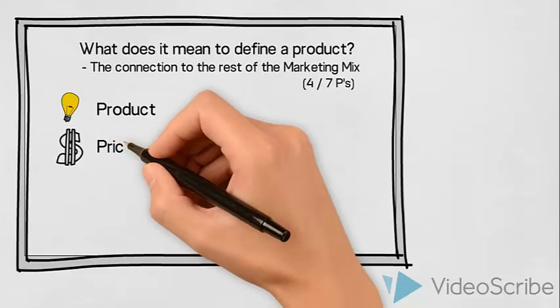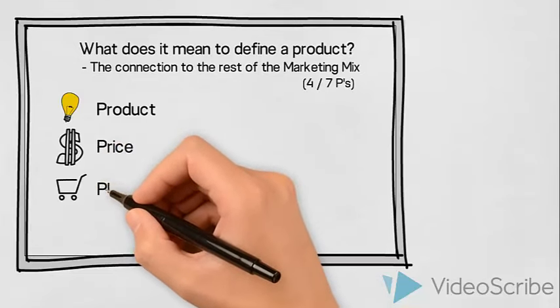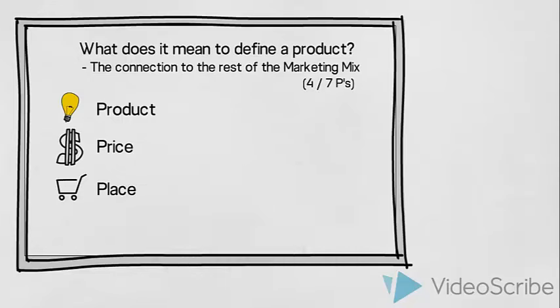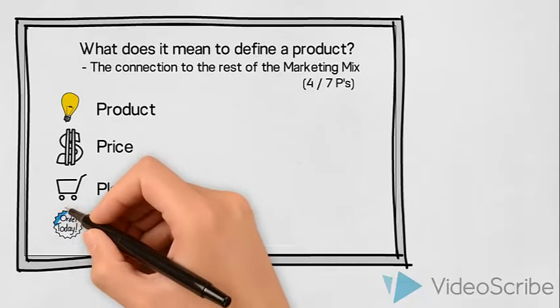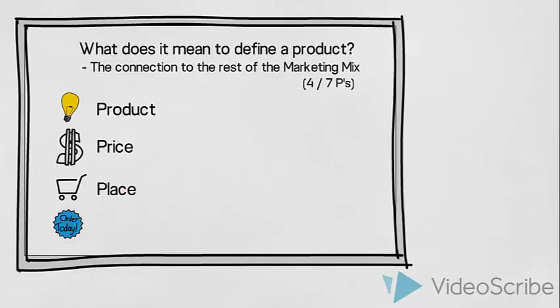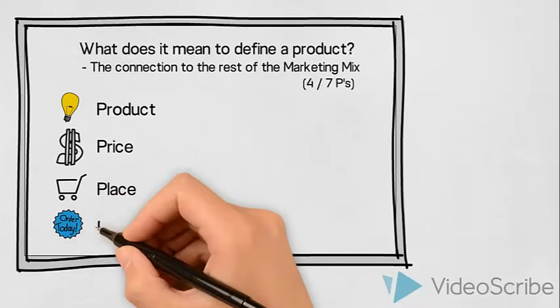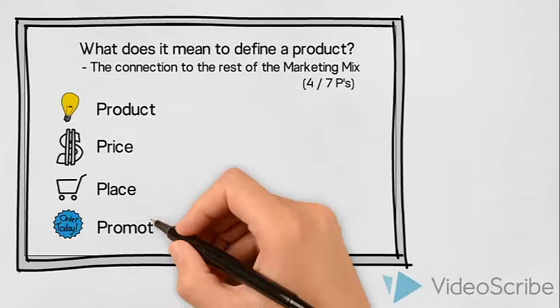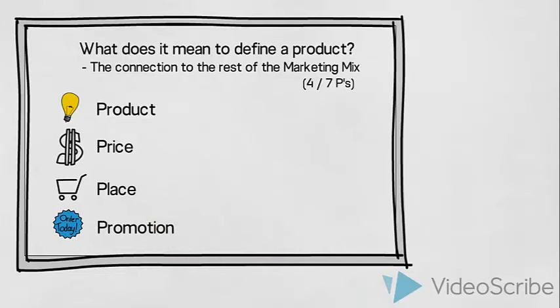Secondly, a decision on price. Thirdly, you will need to decide on the place, through which channels will you distribute the product or service. We also need to make a plan on which promotional activities we will carry out in order to tell our target group about our product and encourage them to buy.